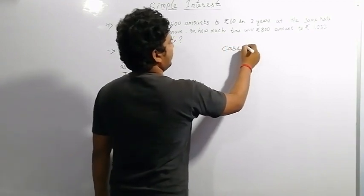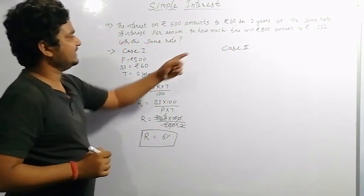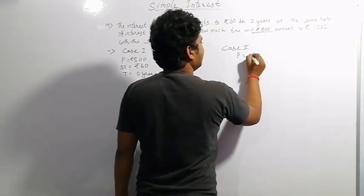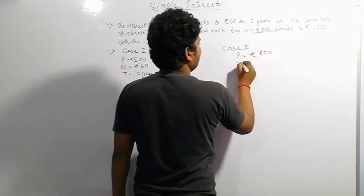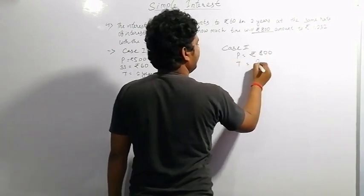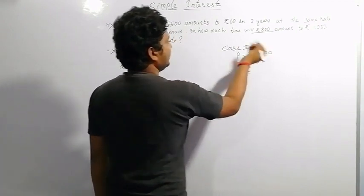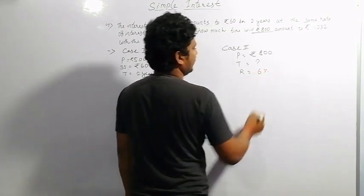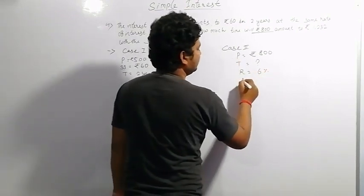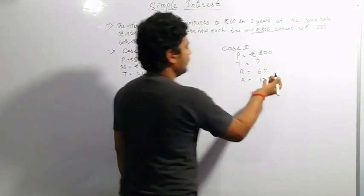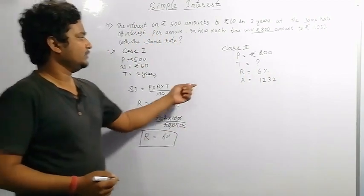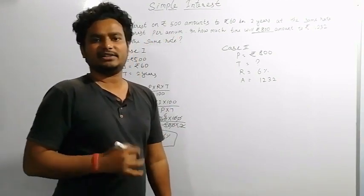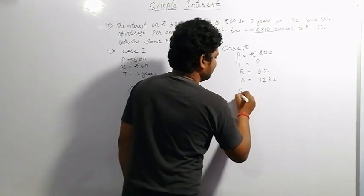In Case 2, the principal is rupees 800, time is unknown, rate equals 6% as found, and amount equals rupees 1,232. We have to calculate the time. Using the amount formula: amount equals simple interest plus principal, we first find simple interest.